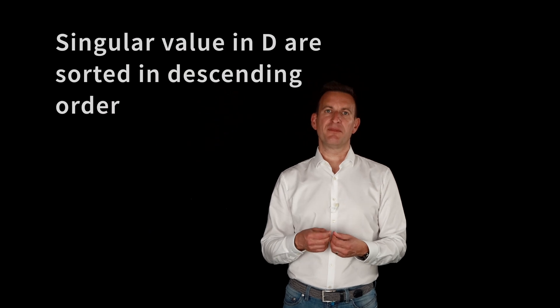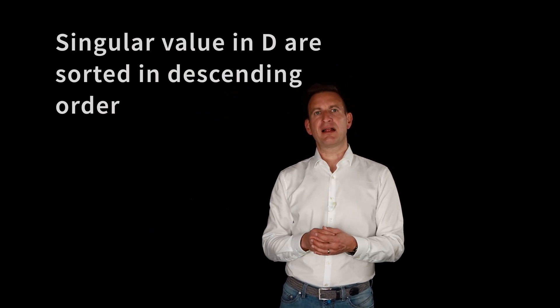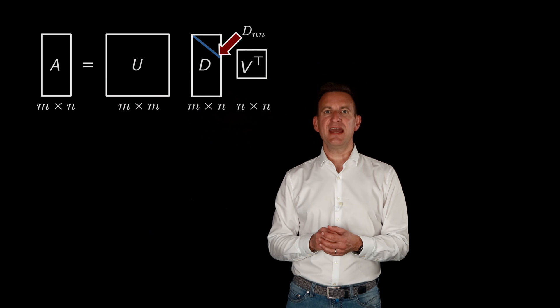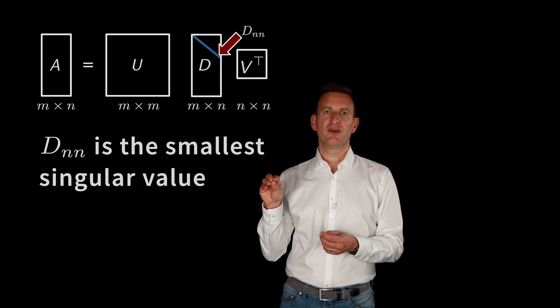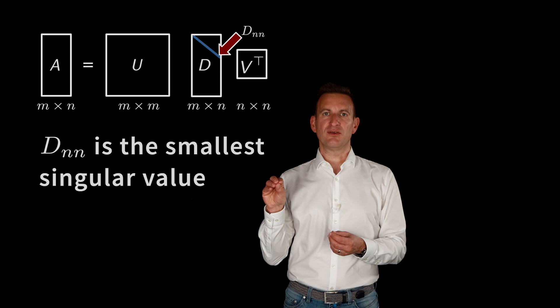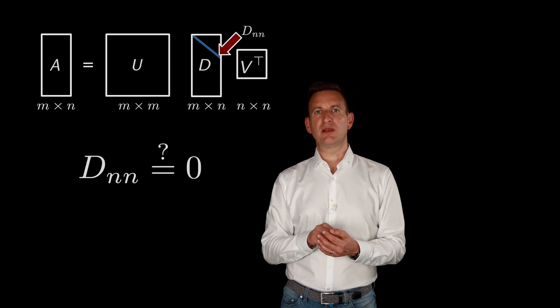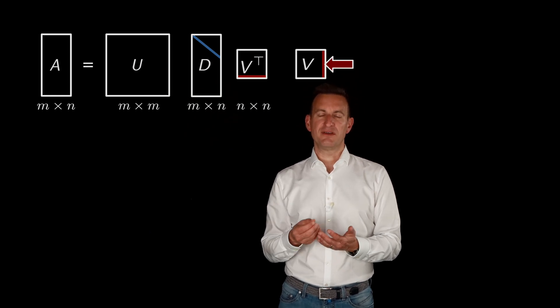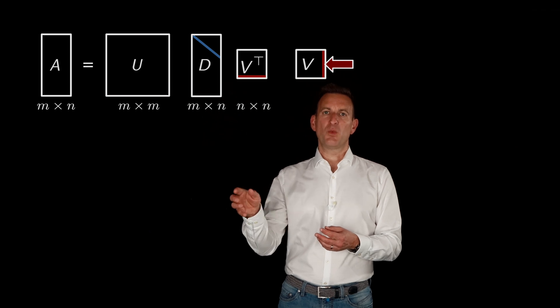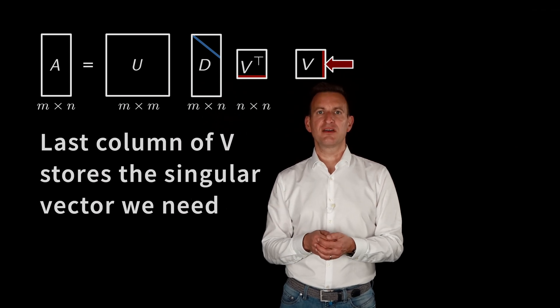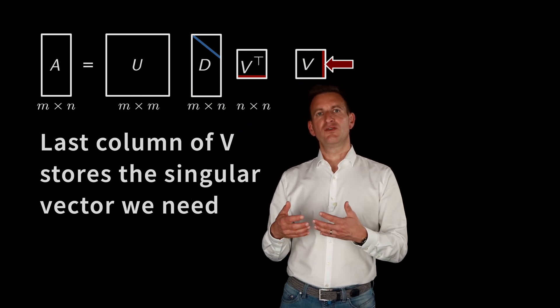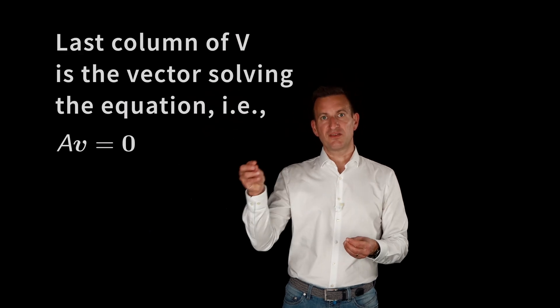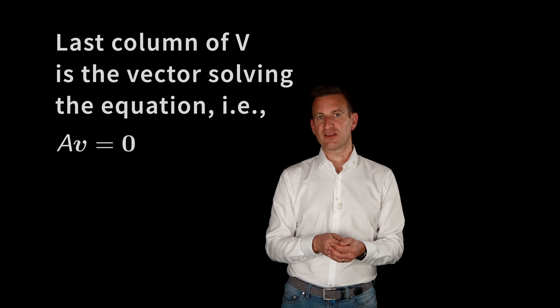And assuming that the matrix D has the singular values sorted on the main diagonal, starting with the largest one, then we pick actually the element D_nn, which corresponds to the smallest singular value. And we inspect this value, and if this value is zero, then AX equals zero actually has a solution besides the trivial one. And then we go into the matrix V transpose, and from the matrix V, we take out the last column. Because the last column corresponds to the singular vector corresponding to this singular value of zero. So this vector is actually the solution to the system AX equals zero.